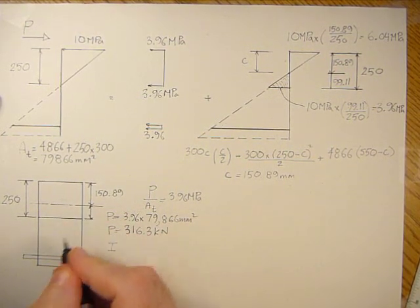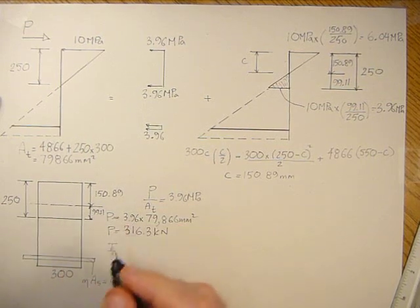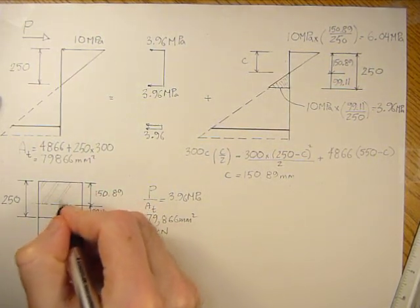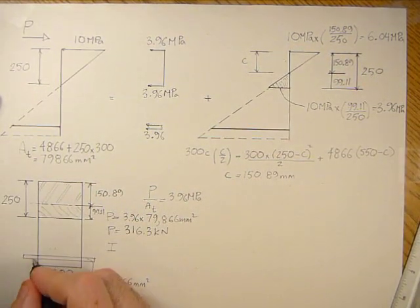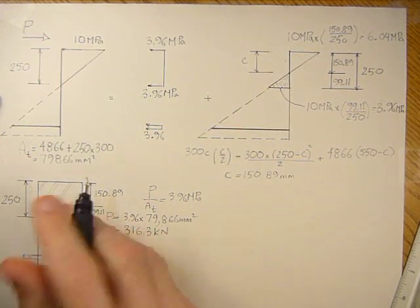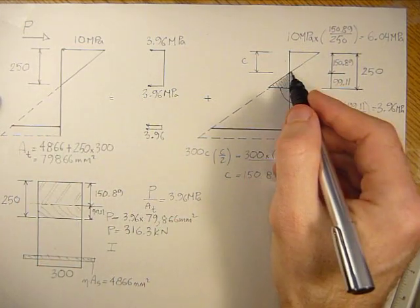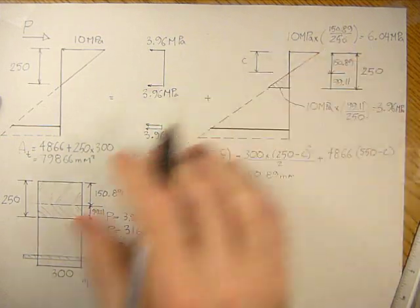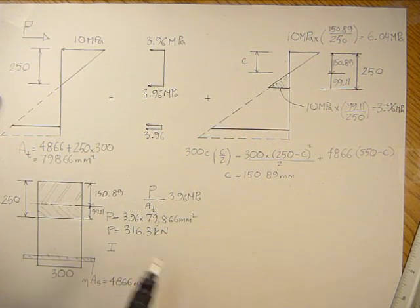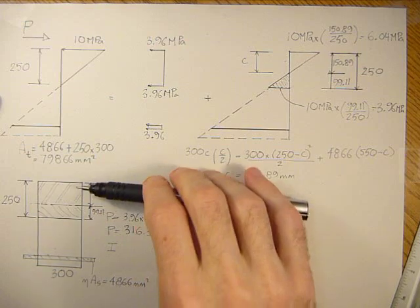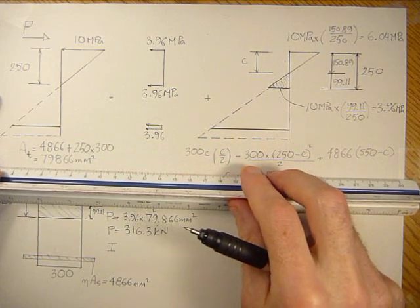From here to here is 150, and from here to here it's 99.1 millimeters. Everything above the neutral axis is in compression for the pure flexural case, and below is in tension. I'll find the neutral axis about this top axis first and then use parallel axis theorem.